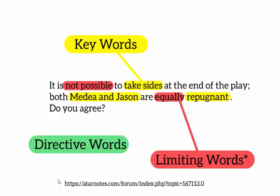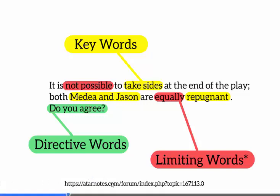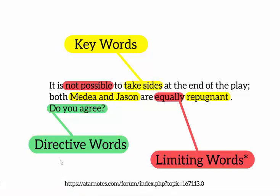Those limiting words are where the flesh of your essay comes into play. And the directive word 'do you agree' — think of it as a continuum. You might agree with part of it and disagree with the other part. You might say they are both repugnant, but Medea more so than Jason. There's an ATAR Notes link with an essay a student wrote in response to this question — feel free to jump on there and see how someone might respond, and it might also remind you how to structure an essay.